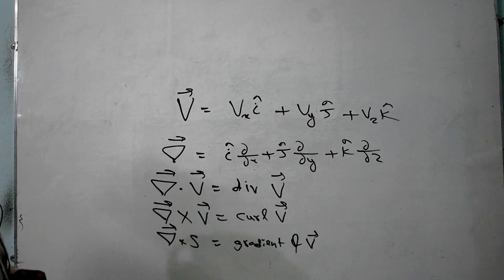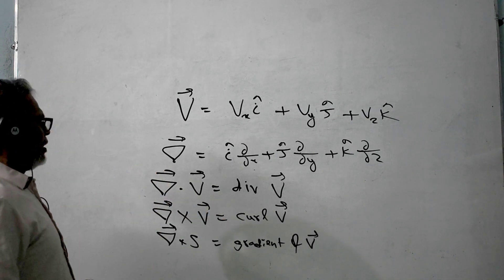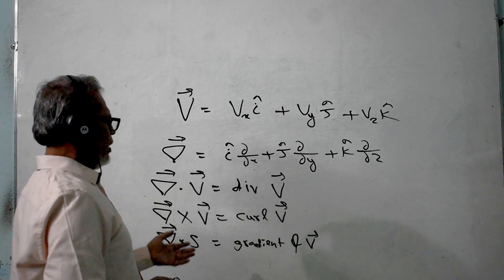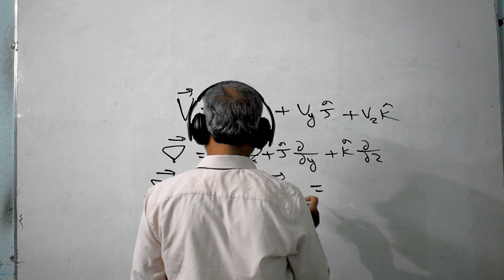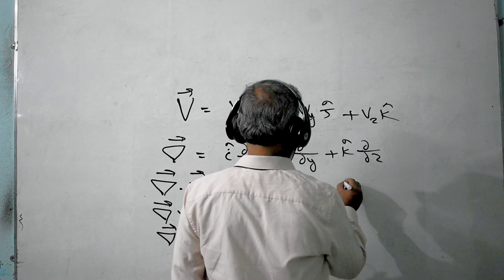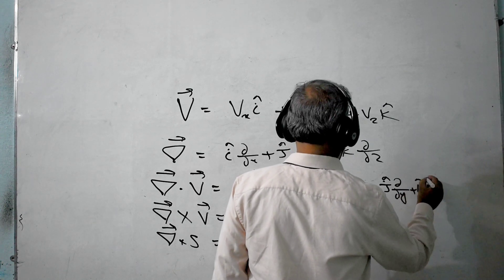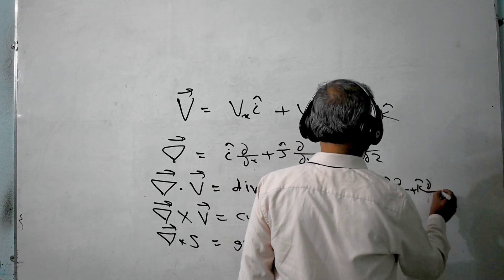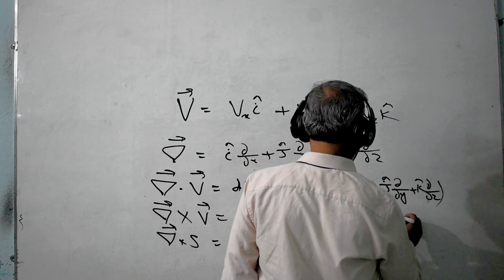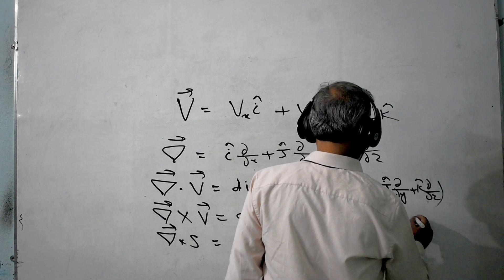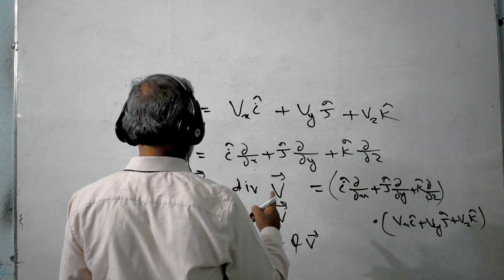Without discussing physical significance first, we have to expand and see how it is multiplied. Del dot V means: (i·∂/∂x + j·∂/∂y + k·∂/∂z) dot (Vx·i + Vy·j + Vz·k). Let us expand this expression.